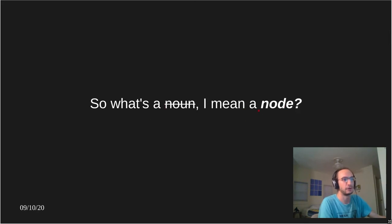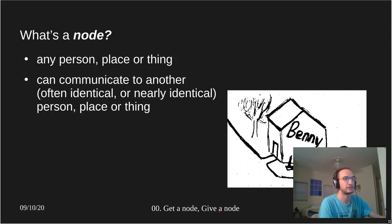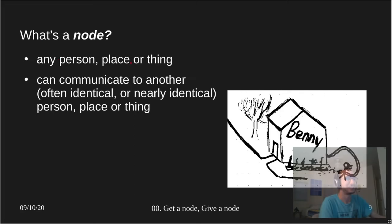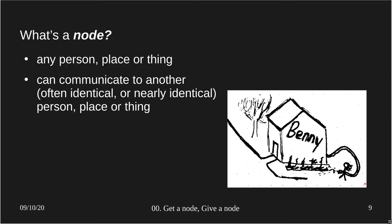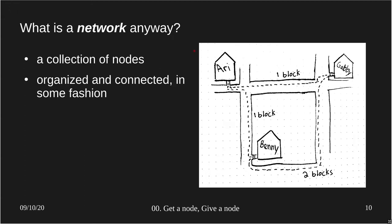What's a node? A node is really any person, place, or thing. In our little story, Benny was a node — or rather his mailbox perhaps was the node. It's any point that can communicate with another typically identical point in the network. And what's a network? A network is a collection of nodes — a collection of points connected in some fashion.